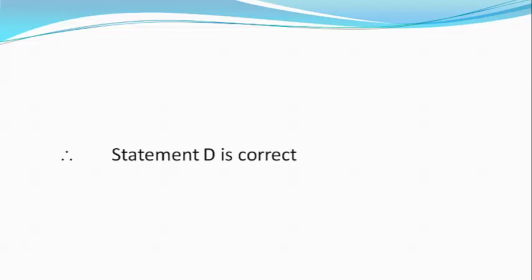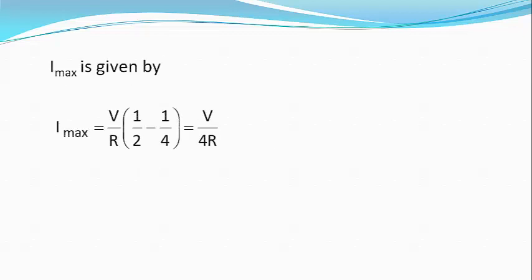Now Imax is given by Imax equals V divided by R, bracket starts, 1 by 2 minus 1 by 4, bracket closed, equals V divided by 4R. Therefore statement B is true.